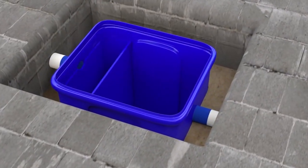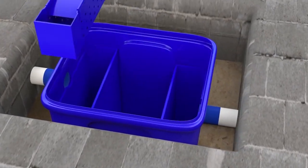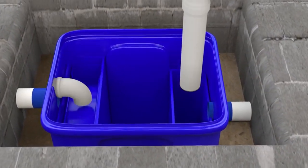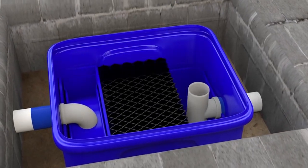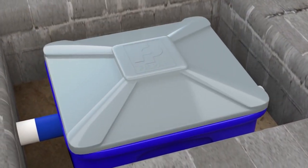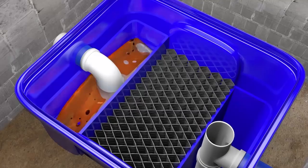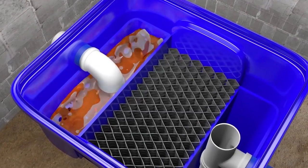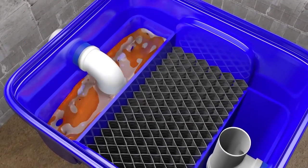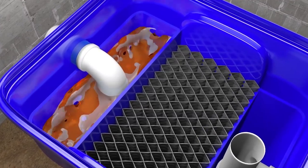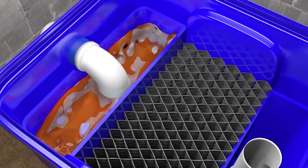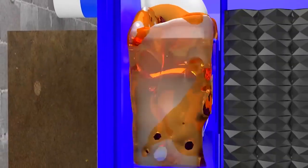It consists of a solid collection basket, a flow deflector, and a coalescing element, and its operation is divided into three stages. The first stage begins right at the entrance of the box, where the deflector reduces the effluent speed and directs it to the collection basket, where floating solids are separated.